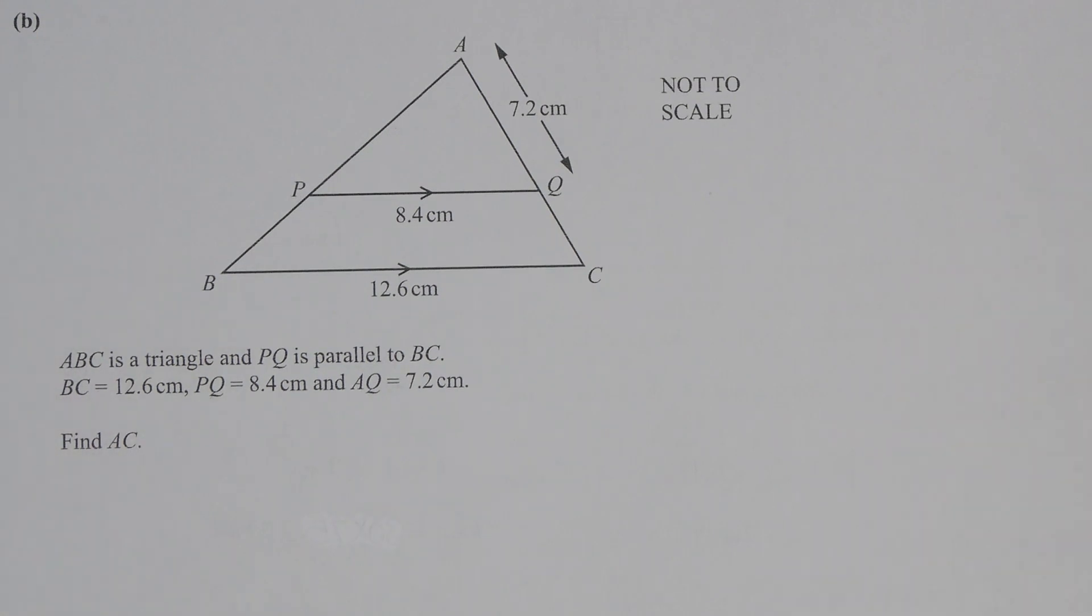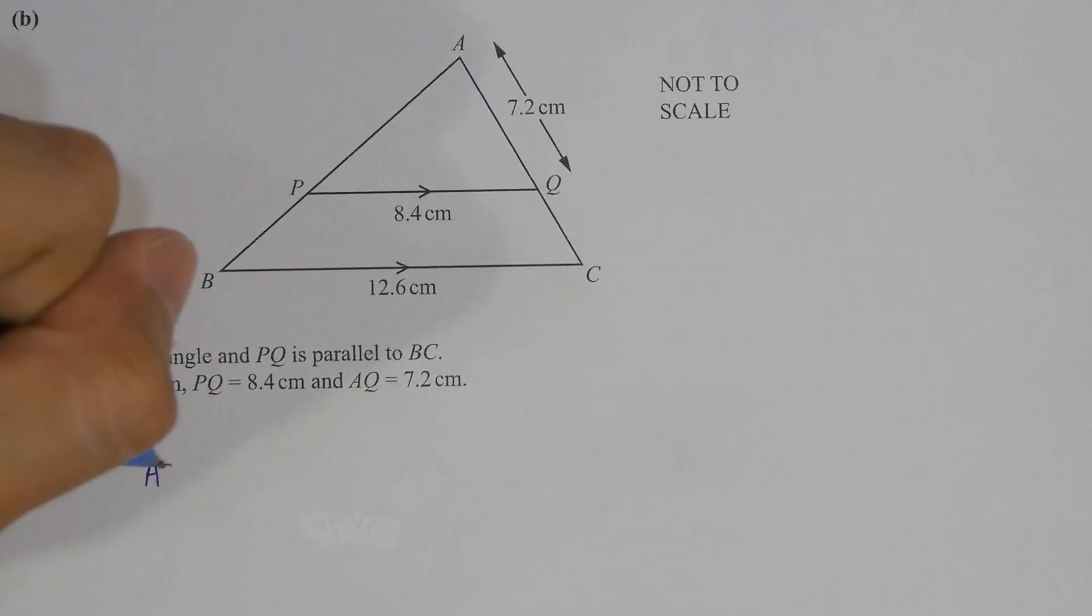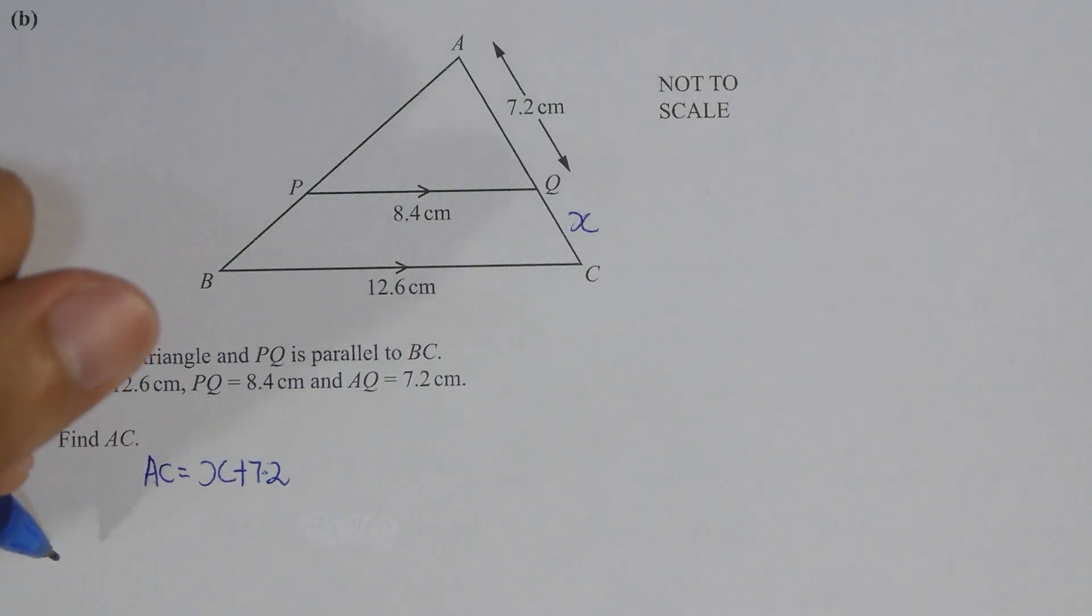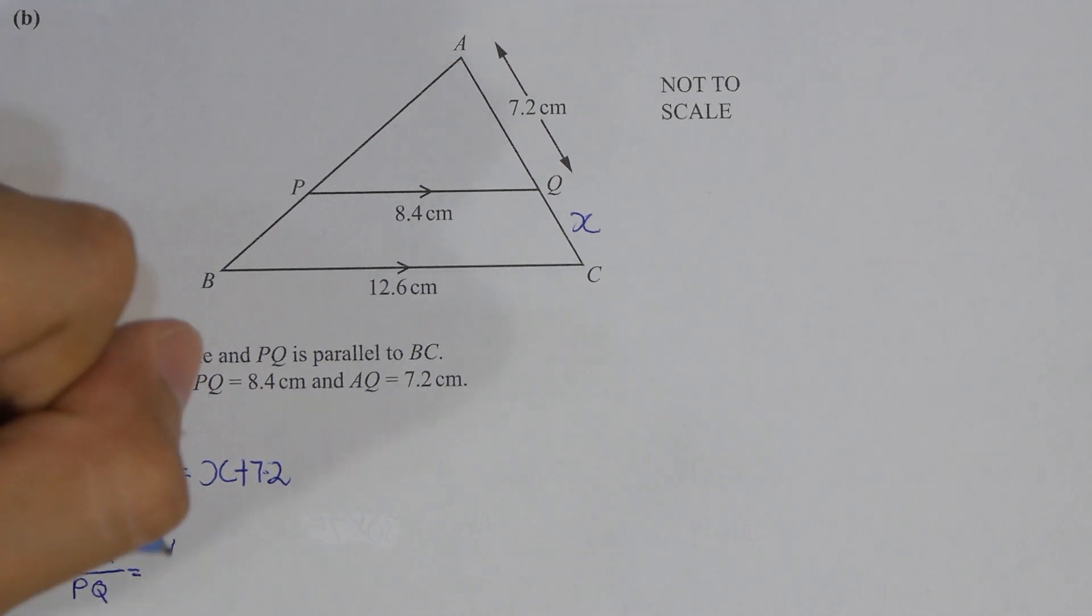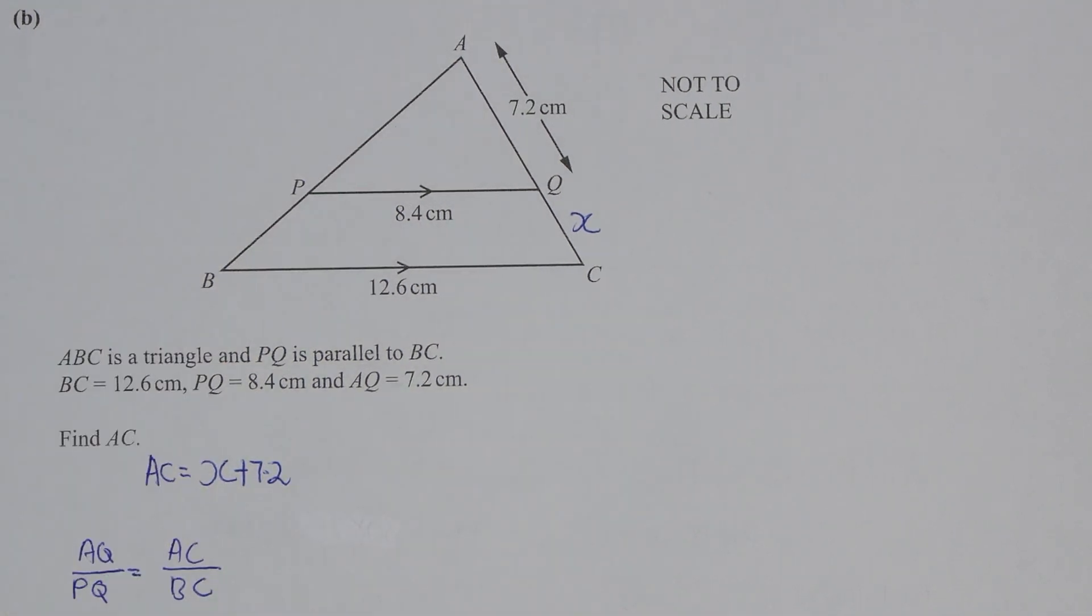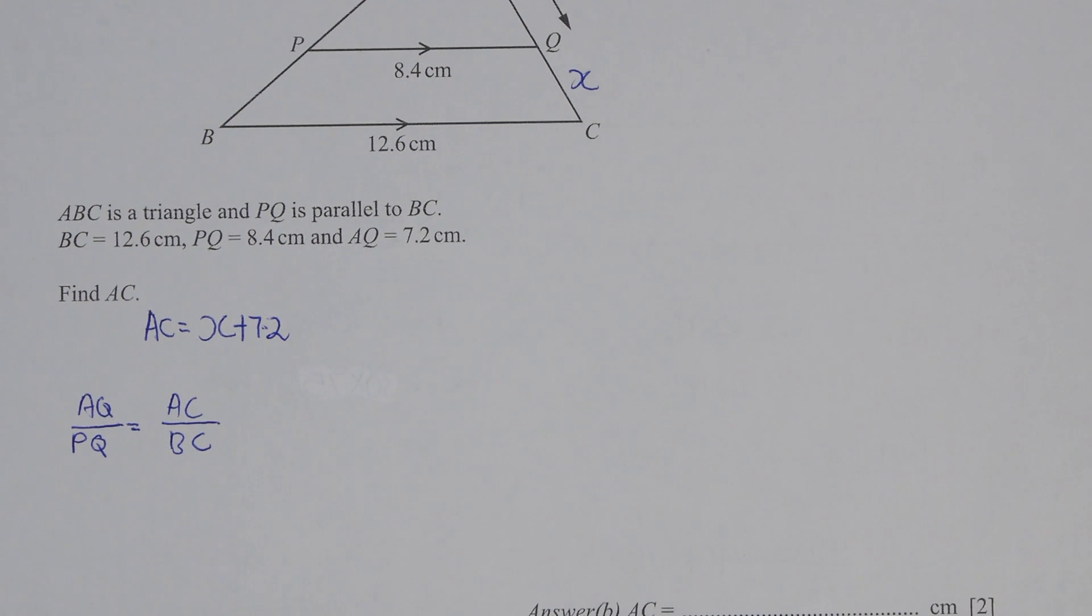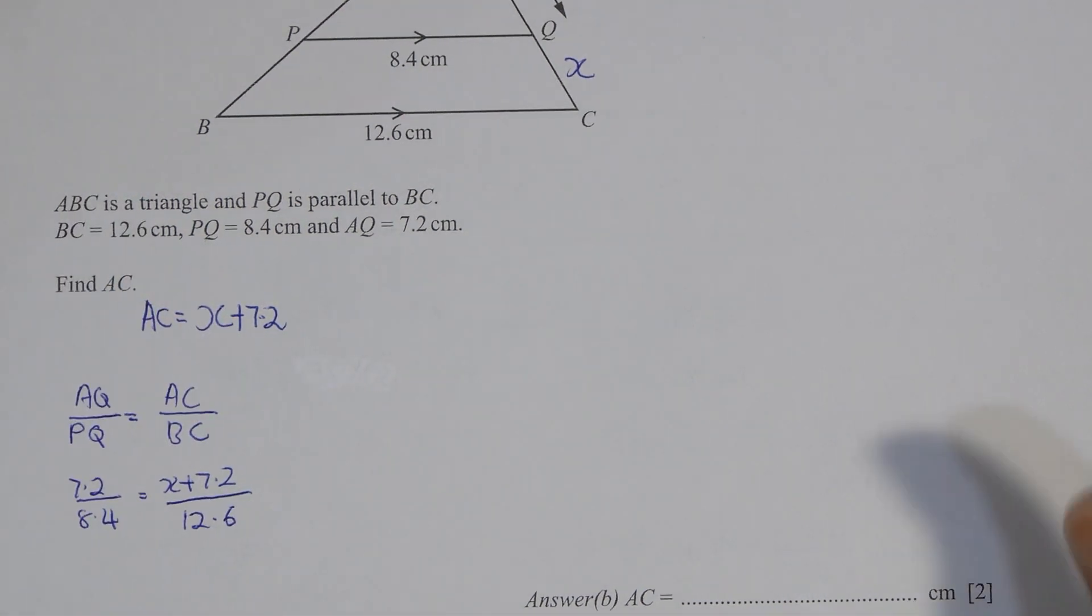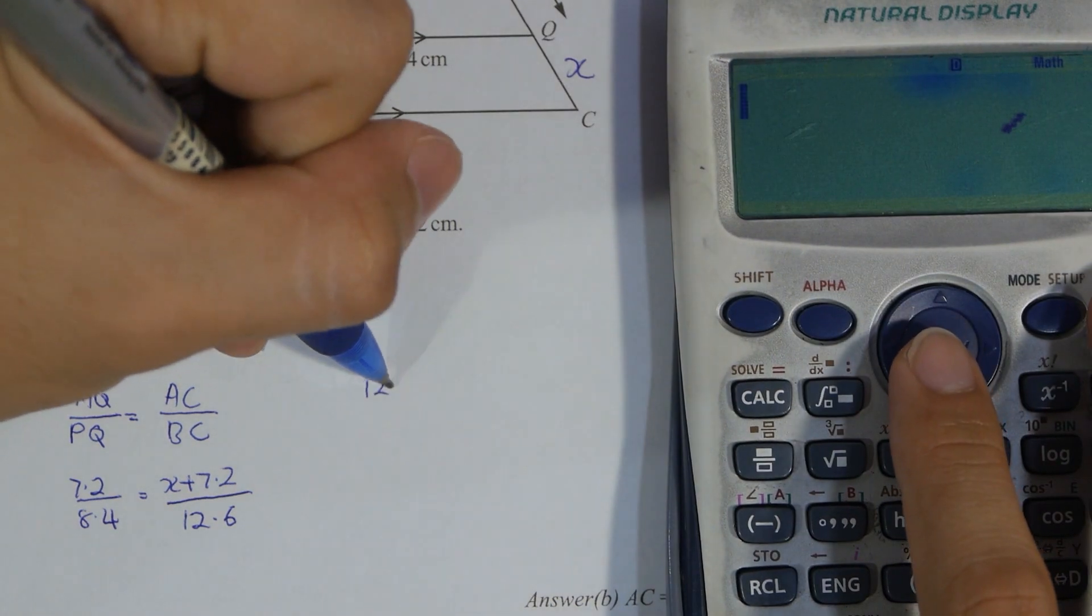First thing I wrote AC as x plus 7.2. So AQ's value is 7.2 over PQ, which is 8.4, equals to x plus 7.2 over 12.6. You run the calculation, cross multiply them, then you will get 10.8 as the value of AC.